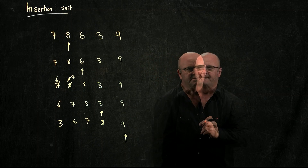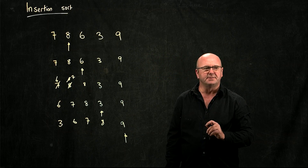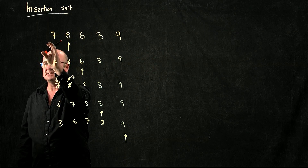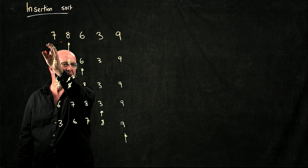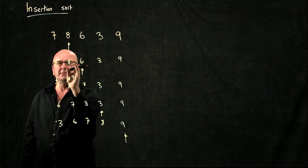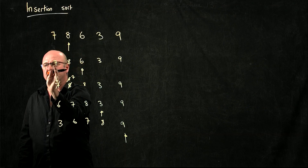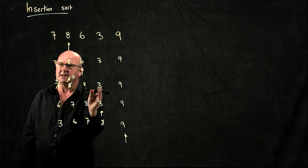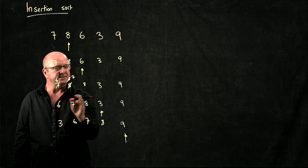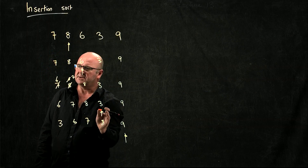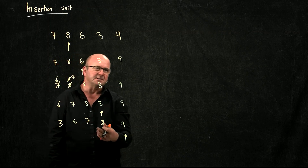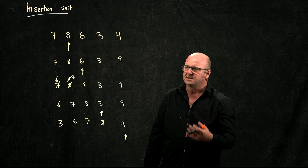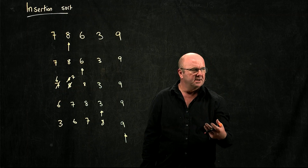So what's the complexity of that sort? How many comparisons are we doing? In the first case, we took out this element and compared it to the thing before it — one comparison. Here we take out the element and compare it to the two things before it — two comparisons. Here we take out an element and compare it to the three things before it — three comparisons. Here we're taking out the thing and comparing it to all things before it — four comparisons. So again, we're doing n minus 1 plus n minus 2 plus n minus 3 plus n minus 4 comparisons.